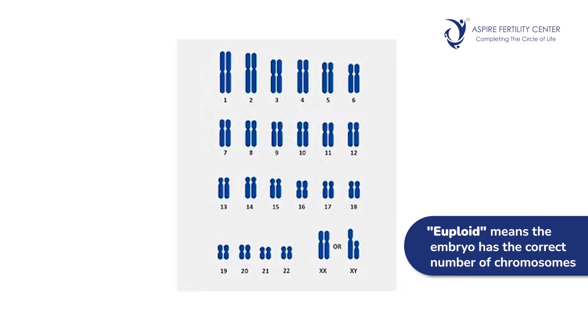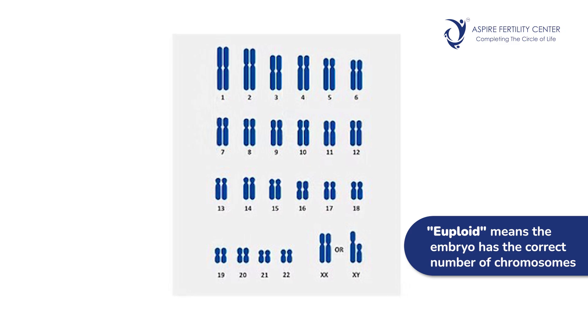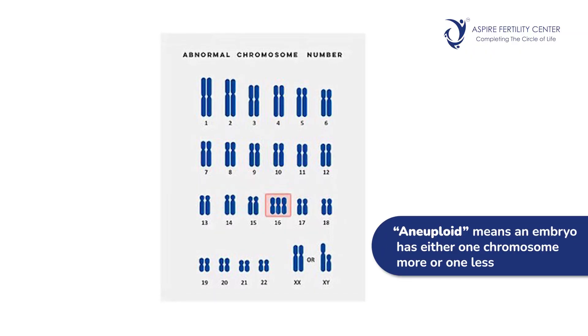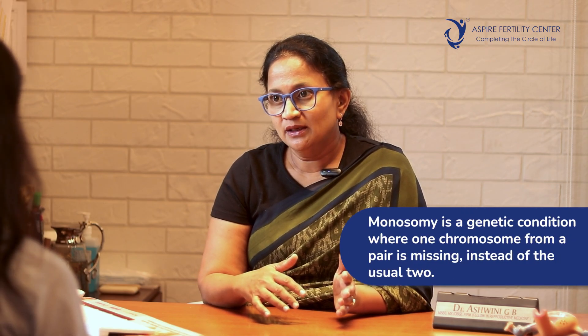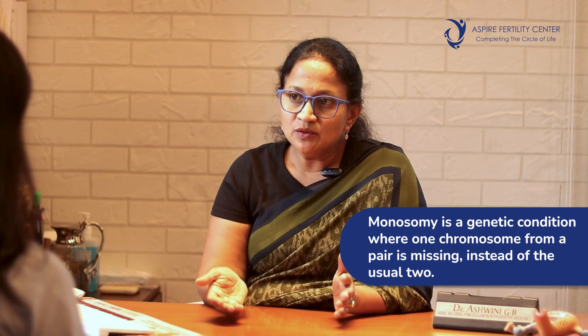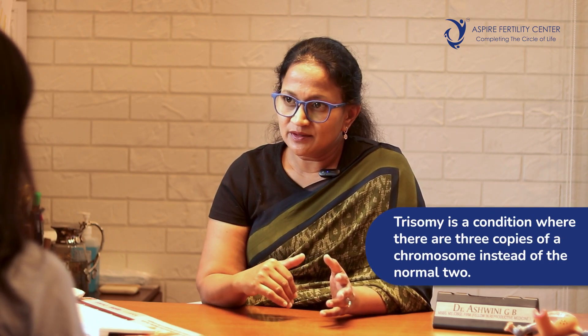There are several kinds of reports that can come in. The first report can be euploid — meaning the embryo has the exact number of chromosomes required for a successful outcome. A euploid embryo has 23 pairs of chromosomes that are correctly arranged. The other report is called aneuploid — having one chromosome more or one chromosome less. In the 23 set of chromosomes, if a chromosome is missing, that's called monosomy; if one chromosome is extra, it's called trisomy. Embryos with extra or fewer chromosomes are not viable and will not result in a pregnancy, ranging from lack of implantation to miscarriage.